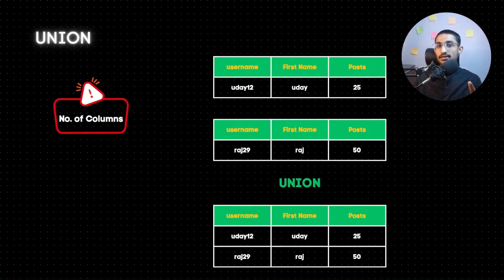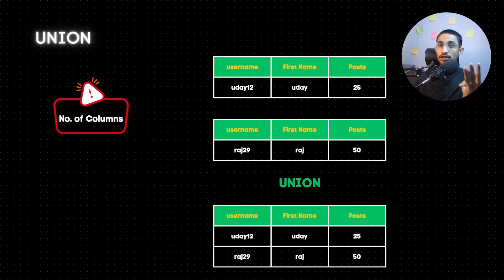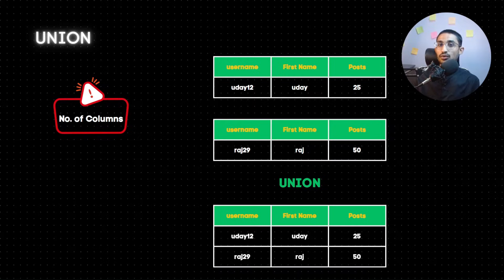For example, if the first query has 2 columns - username and first name - and the second query has 3 columns - username, first name, and post - then using union will produce an error. The most important rule in union is that the first query and the second query must have the same number of columns. That is very important in union.